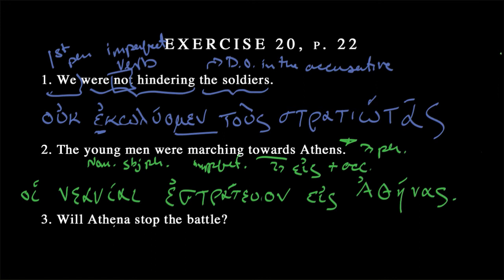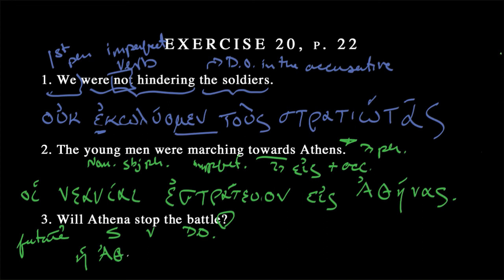Speaking of Athena — let's go to number three: "Will Athena stop the battle?" So we've got two things: we've got a question, and this is future tense. The subject is Athena, "stop" is the verb, and "the battle" is the direct object with a definite article. To make this a question in Greek, all you need to do is add what looks like a semicolon at the end of the sentence.